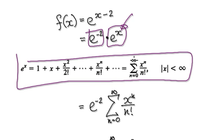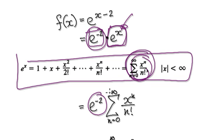Now this block here can be represented by this series. So here you've got e to the power of negative 2. And then this block here can be represented by this series.